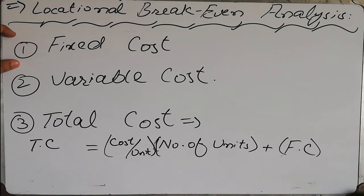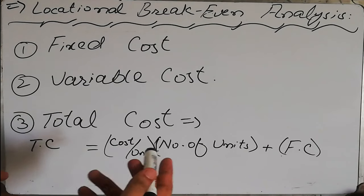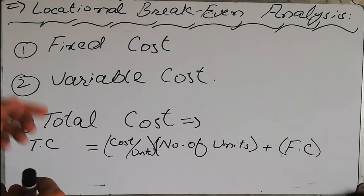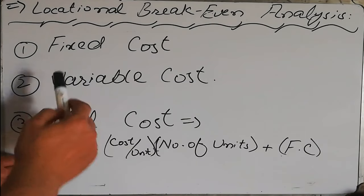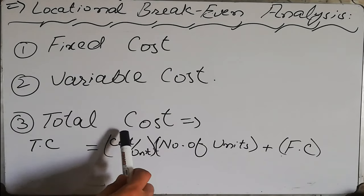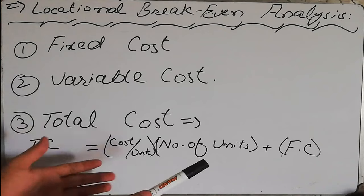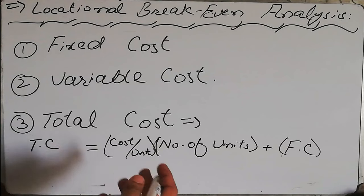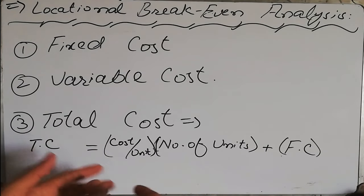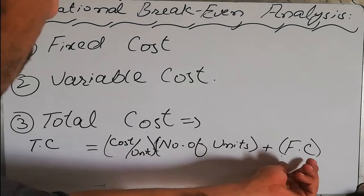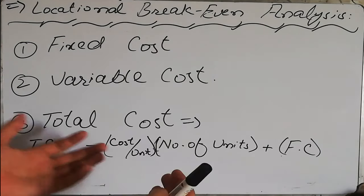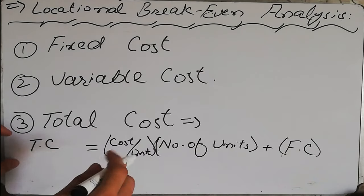To summarize: fixed cost is what the company pays even without producing any product; variable cost totally depends on the number of units produced. The total cost is the sum of fixed cost plus variable cost. The variable cost equals cost per unit multiplied by the number of units being produced. Adding these two gives us the total cost related to a certain production of units.